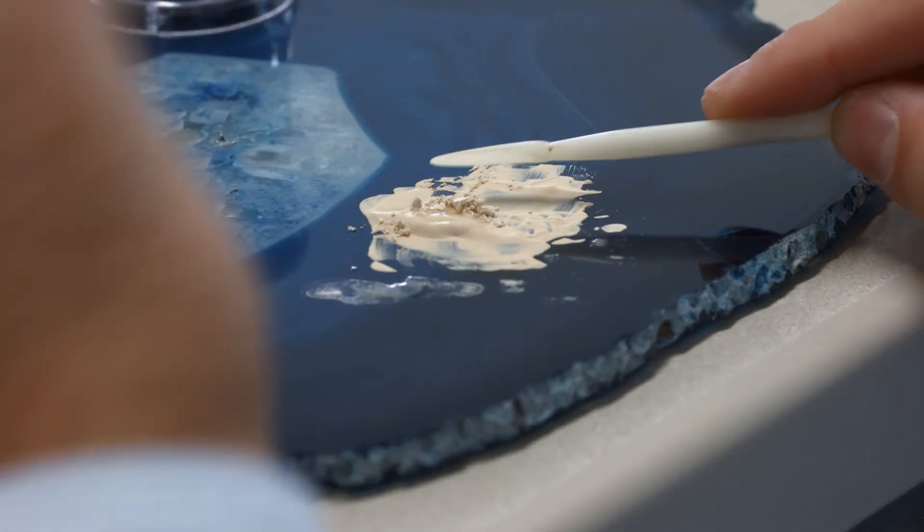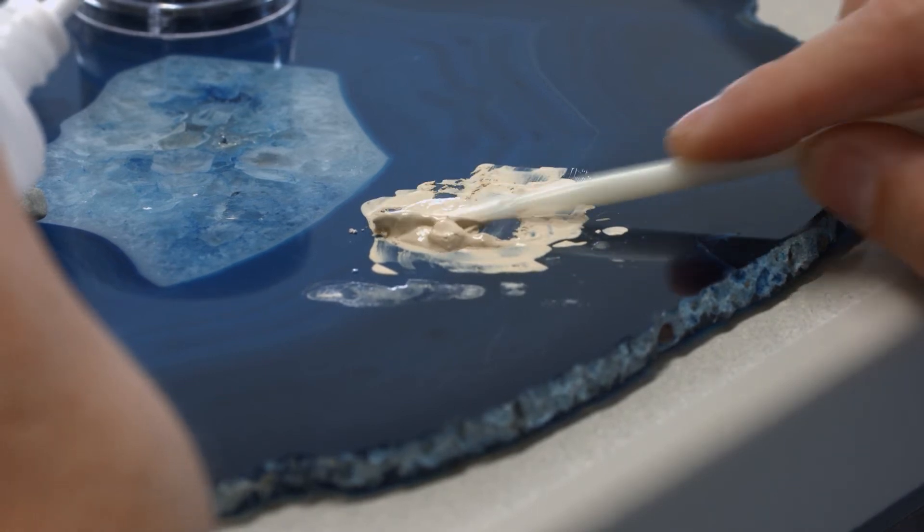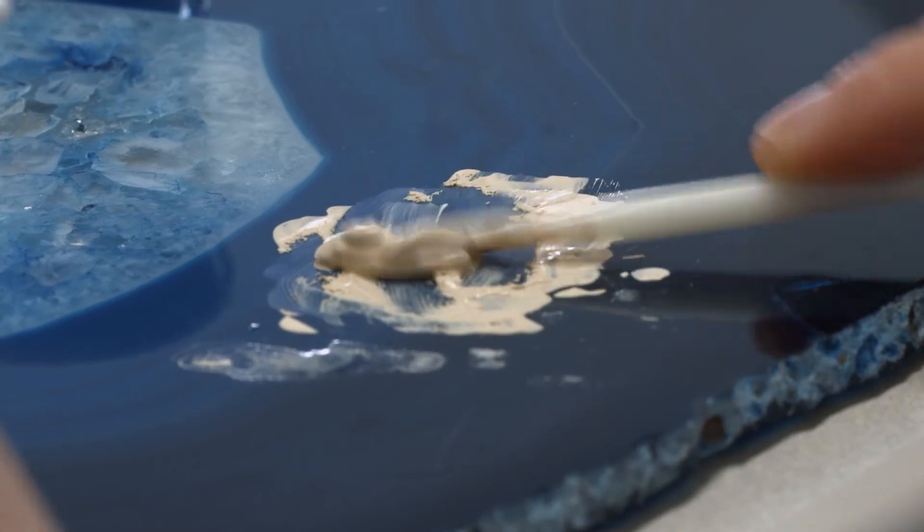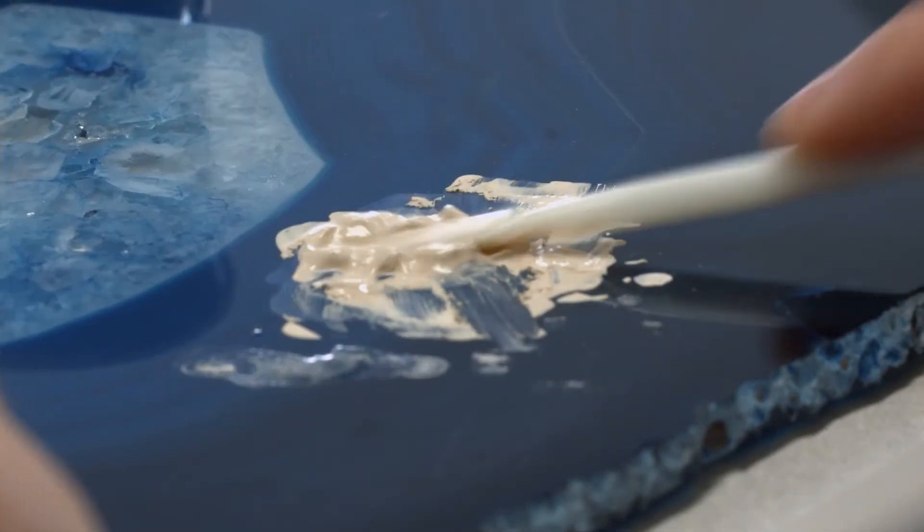Remove the amount of opaquer powder required for the covering layer from the jar and add it to the dried wash opaquer residue on the mixing pad. Mix everything to the desired consistency with some IPS powder opaquer liquid.